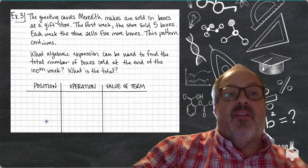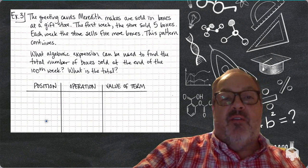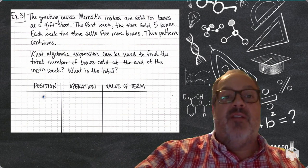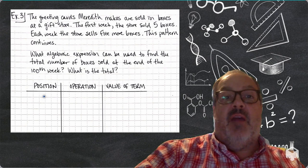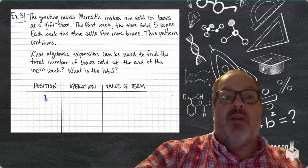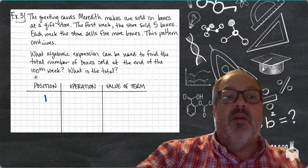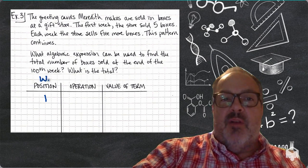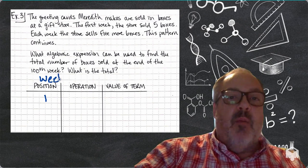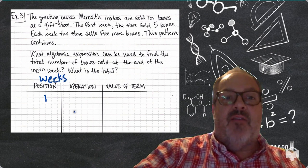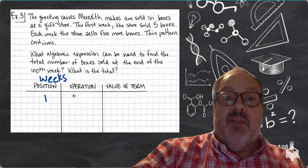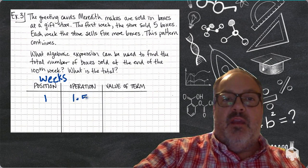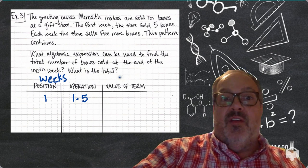In example three, it says the green cards that Meredith makes are sold in boxes at a gift store. The first week, she sells five boxes, and then each week after that, the store sells five more boxes. And this pattern is going to continue. What we want to find out is what's kind of the pattern that we're noticing, and how many boxes would she sell after the hundredth week.